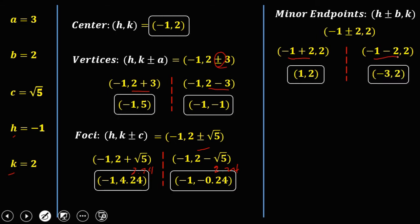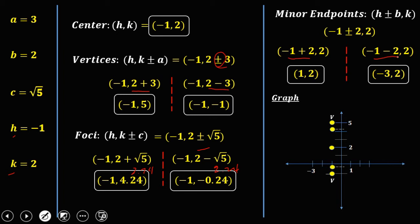These are the coordinates of the center, vertices, foci, and minor endpoints. To graph the ellipse, first plot the center, then the vertices, then the foci, then the minor endpoints. After plotting all the coordinates, draw the ellipse through them. This is the graph of our ellipse.